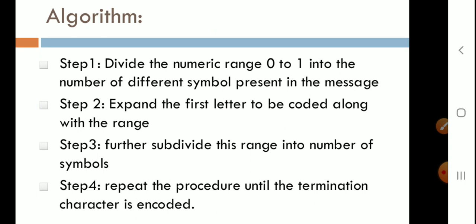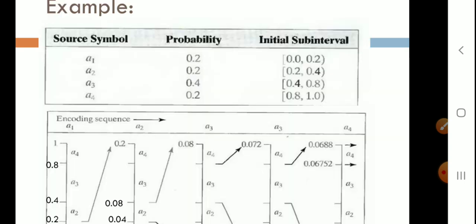The message has to be compressed — encoded in the range of 0 to 1. Step 2 is to expand the first letter to be coded along with the range. Let us look at an example.